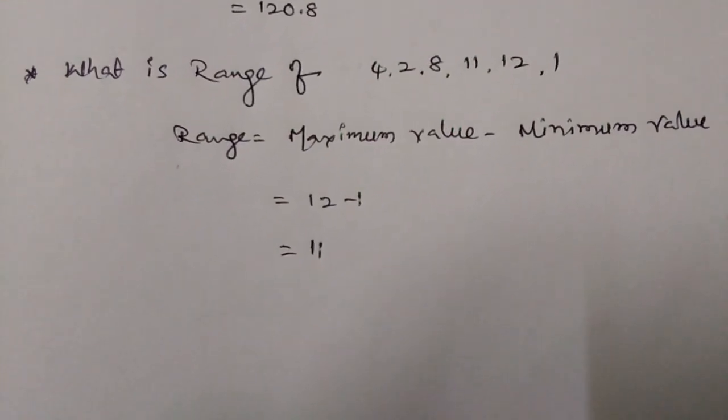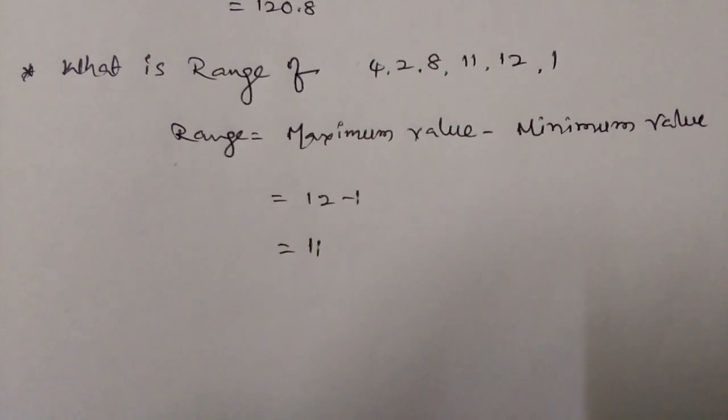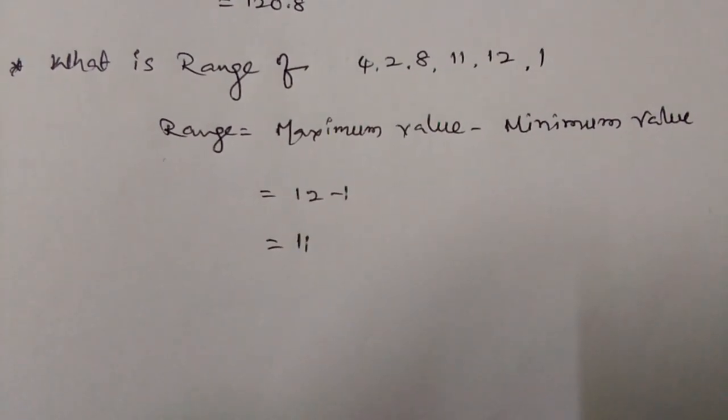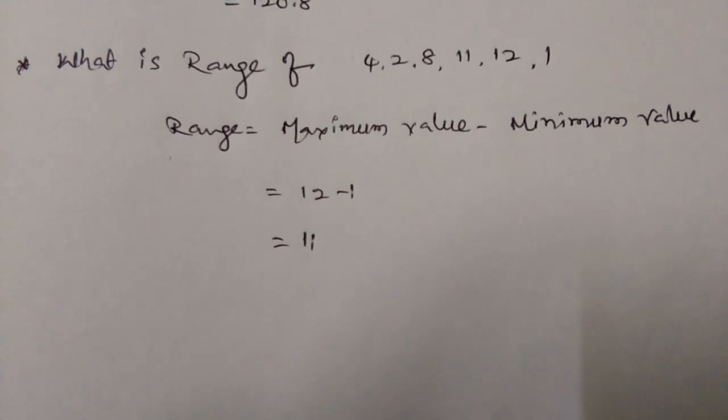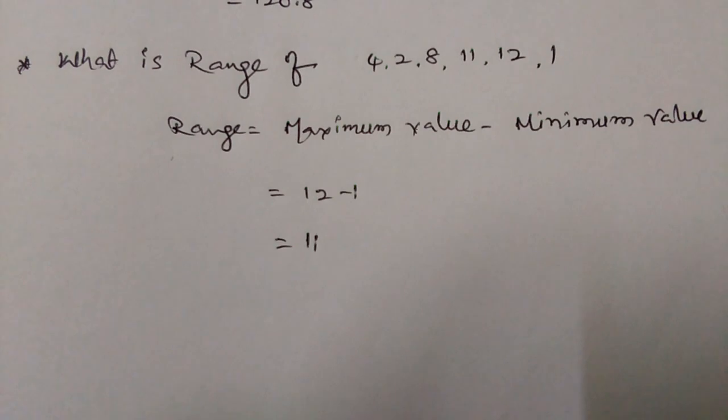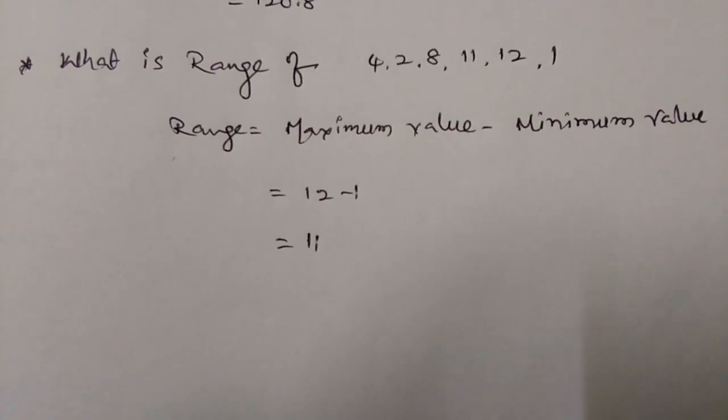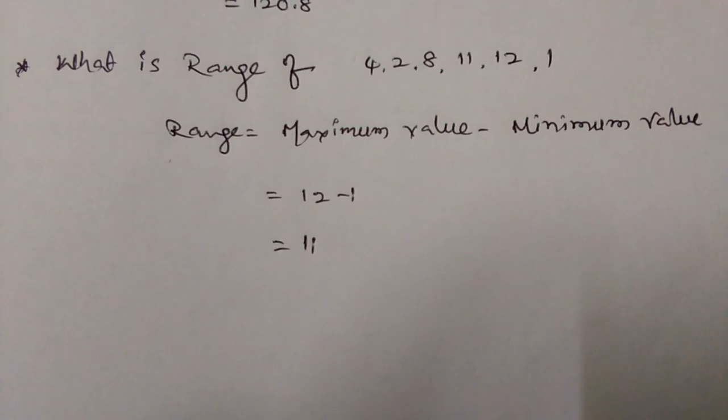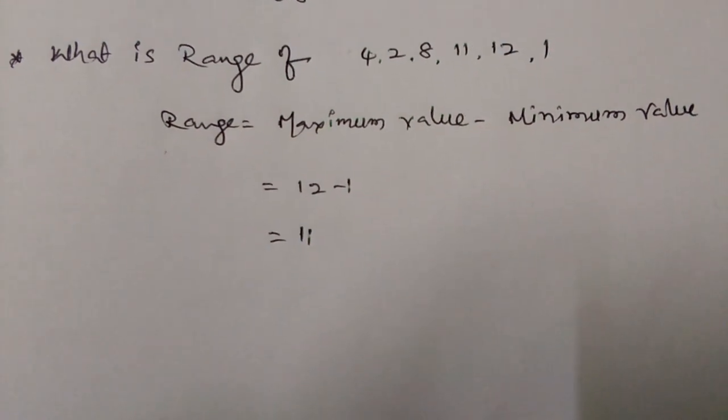And one more problem: what is range of 4, 2, 8, 11, 12, 1? So actually range equals maximum value minus minimum value. Here 12 is the maximum value, 1 is the minimum value, then 12 minus 1 equals 11.